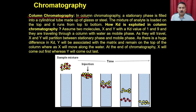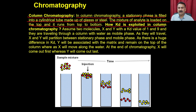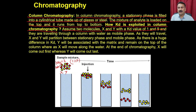In column chromatography, a stationary phase is filled into a cylindrical tube made of glass or steel. The mixture of analyte is loaded onto the top and runs from top to bottom. To illustrate how the distribution coefficient is exploited, assume two molecules X and Y, where Kd(X) = 1 and Kd(Y) = 9, meaning they separate in a 1:9 ratio.